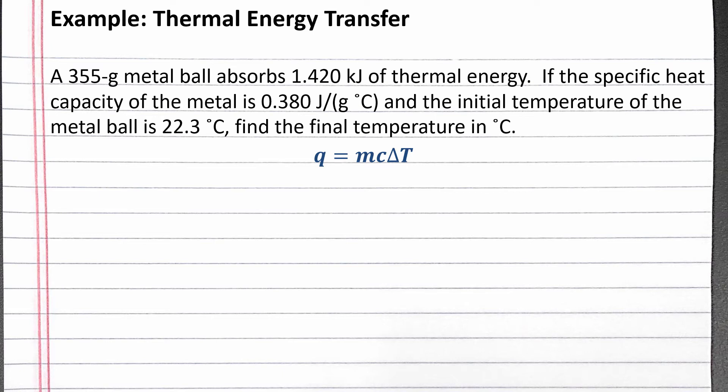When we plug heat into this equation, we first convert from kilojoules to joules. 1.420 kilojoules is equal to 1420 joules. The mass is already in grams, and our change in temperature is the final temperature minus the initial temperature. We're given the initial temperature 22.3 degrees Celsius. Now we just need to solve for the final temperature.